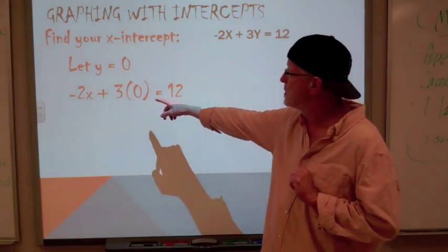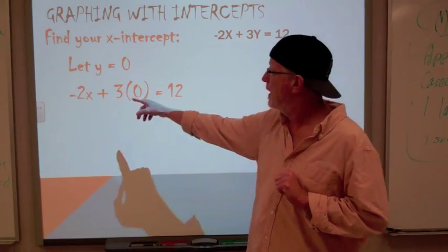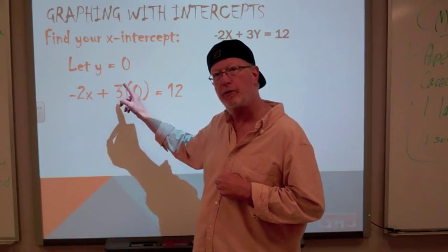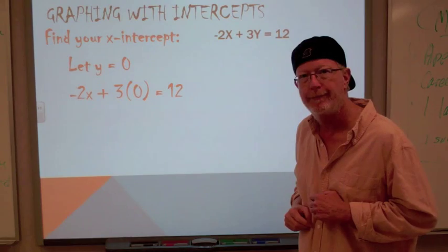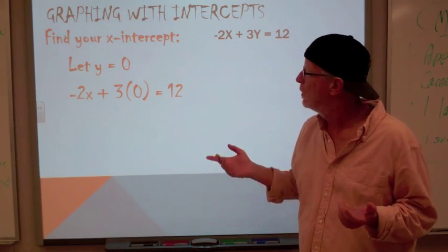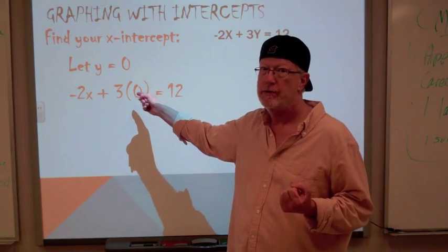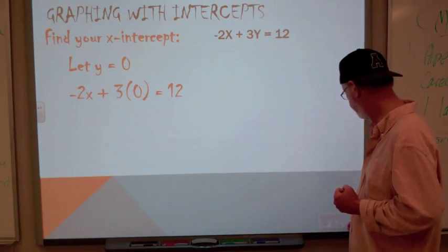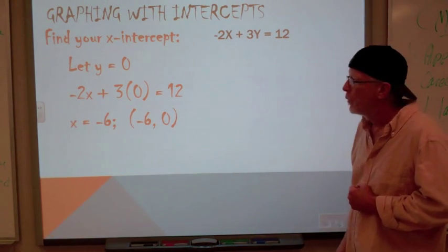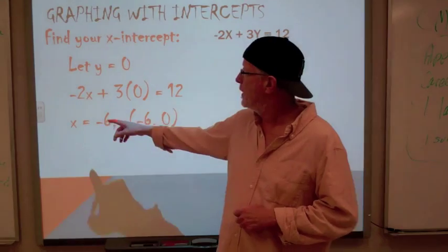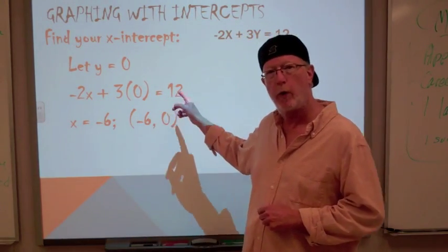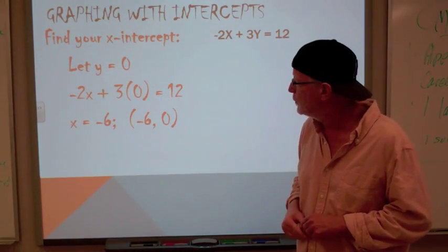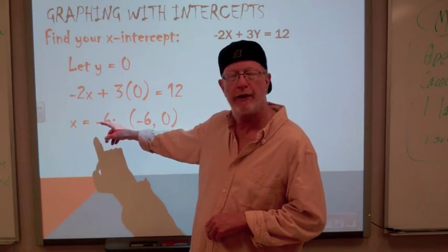So we have our y is going to equal zero. We plug this into our equation right here. And now we have negative two x plus three times zero equals twelve. Everybody knows what three times zero is. We're going to end up with negative two x equals twelve. We divide both sides by negative two. And we get x equals negative six.